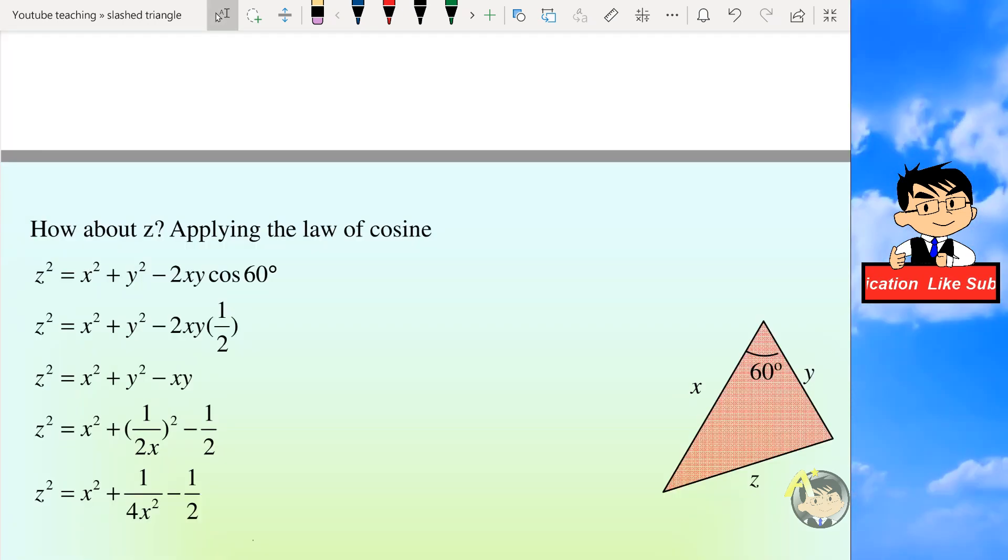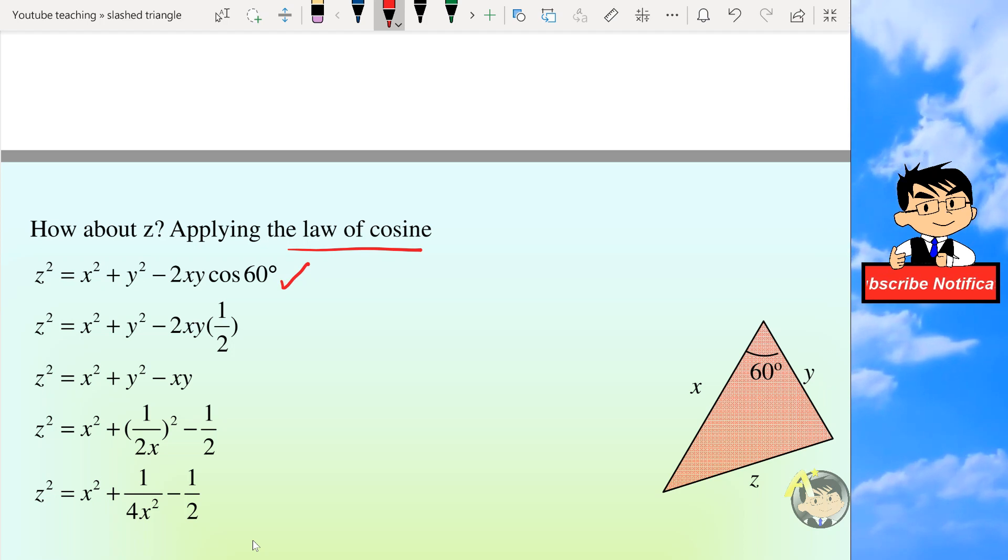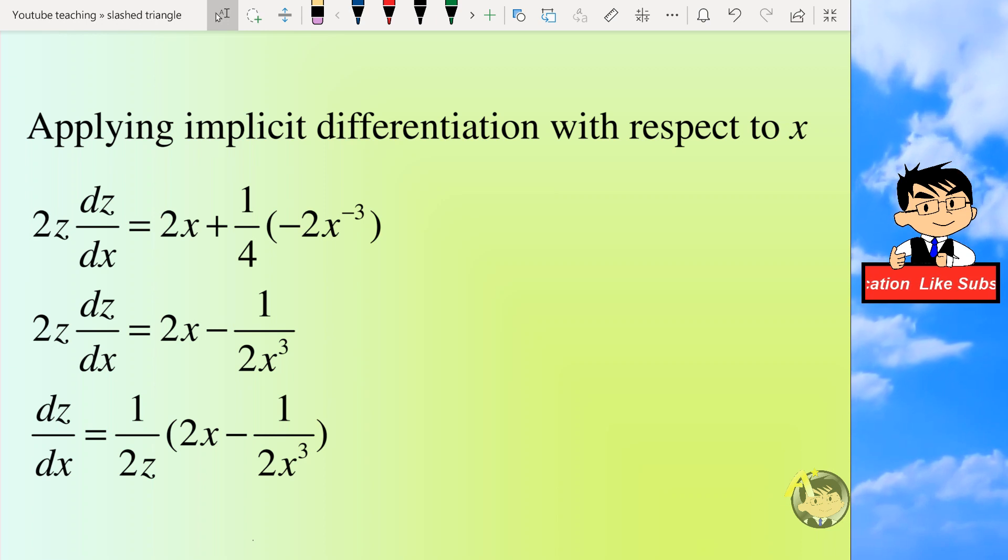So how about z? Will z be a maximum or minimum value for some values of x or y? So we apply the law of cosines, and then we put in xy to be half and also y to be 1 over 2x, so that we can get an expression which involves only z and x. We apply implicit differentiation on both sides, and then we make dz over dx the subject, so we can get this expression.